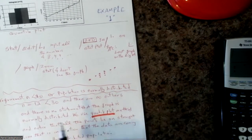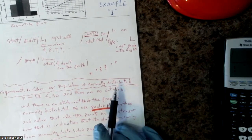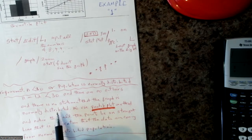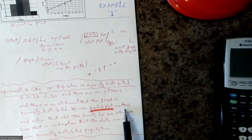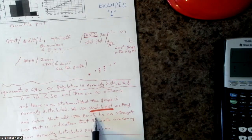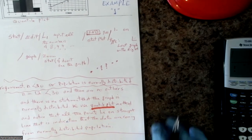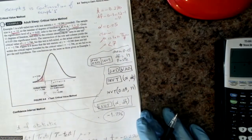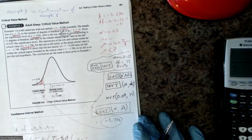If n is less than 30, there are no outliers, and there is no statement that the population is normally distributed, then we use the quantile plot method. Notice that all the points lie on the straight line — that is the indication that the data are coming from a normal distribution. This requirement must be met before we actually work on the problems. Now, for Example 1: n was 12, so df equals n minus 1 equals 11. Alpha was 0.05, and the claim was that the mean is less than 7.